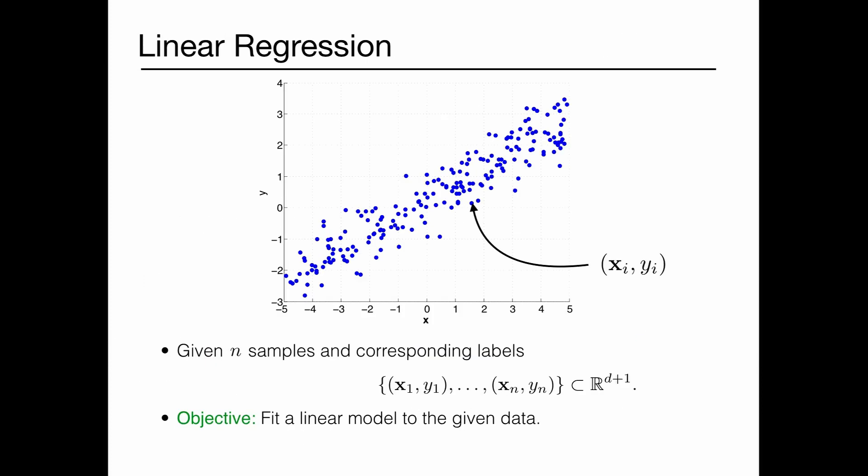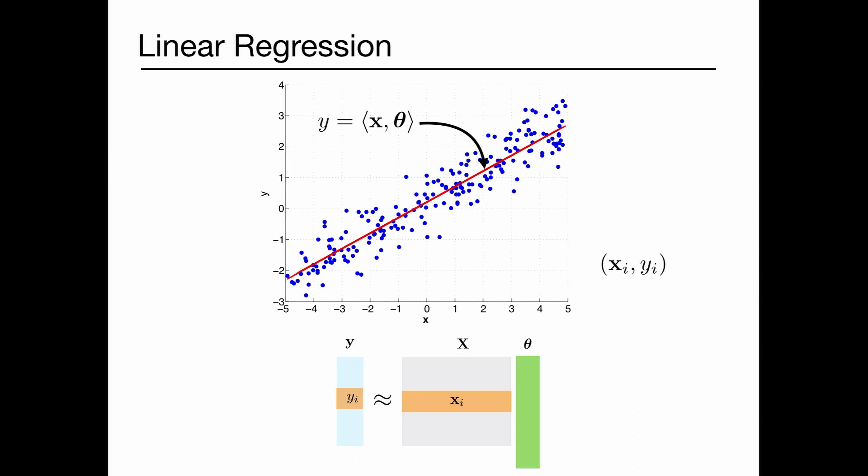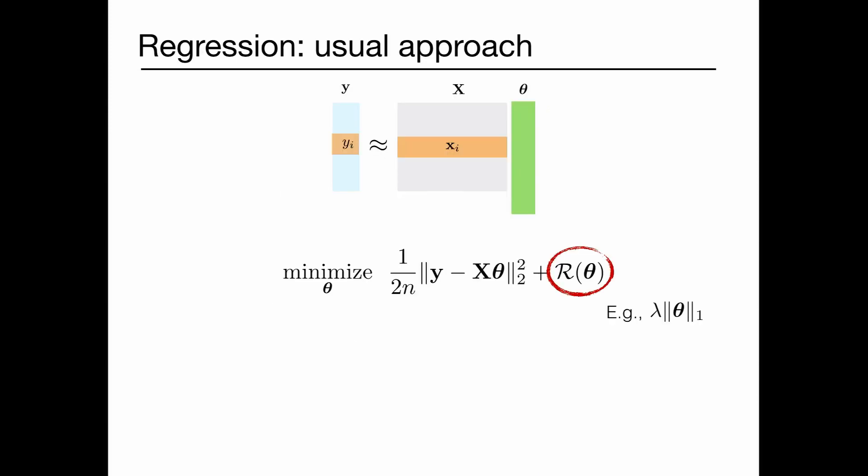Let me give you a simple example. Suppose you're trying to solve a large scale linear regression problem. You have n samples, a lot of samples, and corresponding labels. You want to fit a linear model to this data. That means your data matrix is X, the label matrix is y, and you want to find some vector theta that when you multiply it with X, you get back y. What you do is minimize the L2 loss with respect to theta, and there might be some other constraints on theta represented by this regularizer.